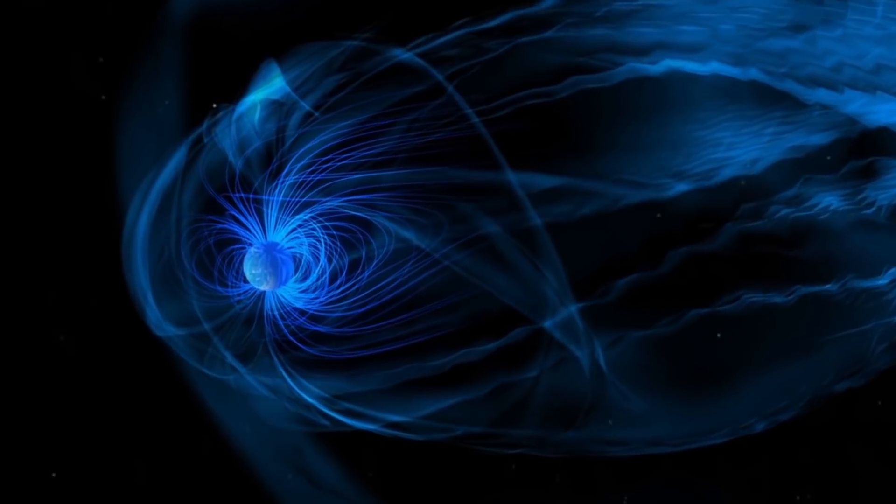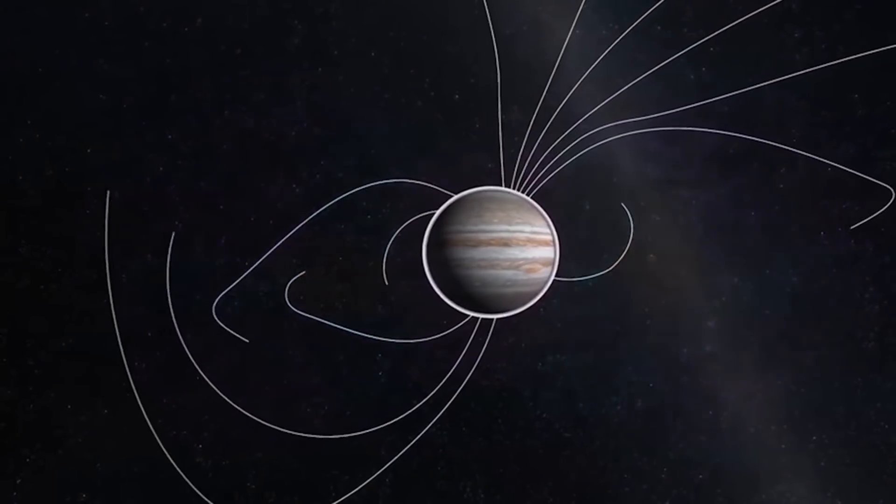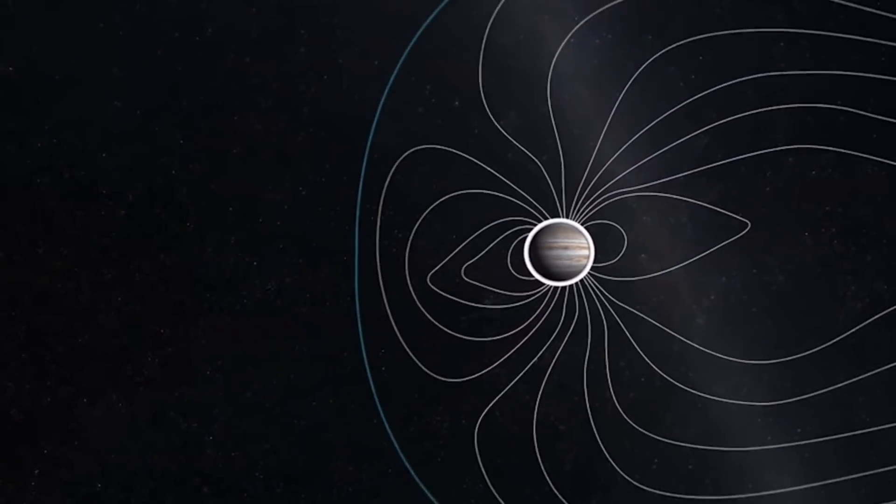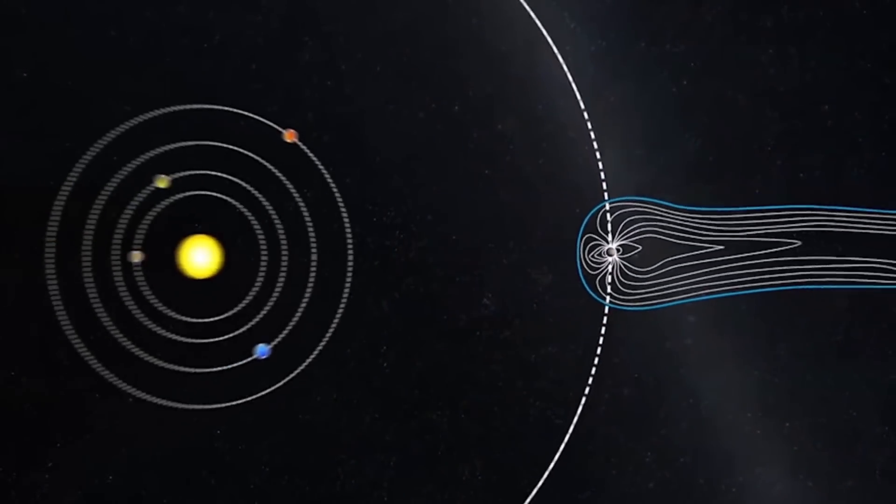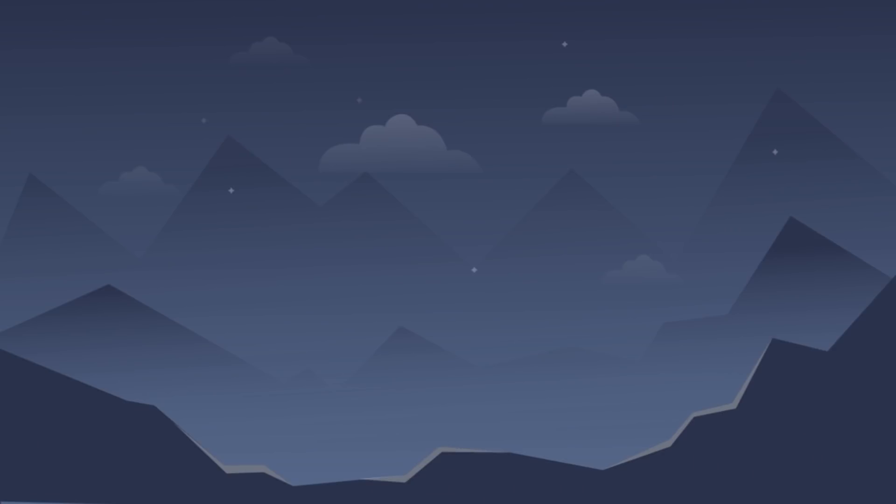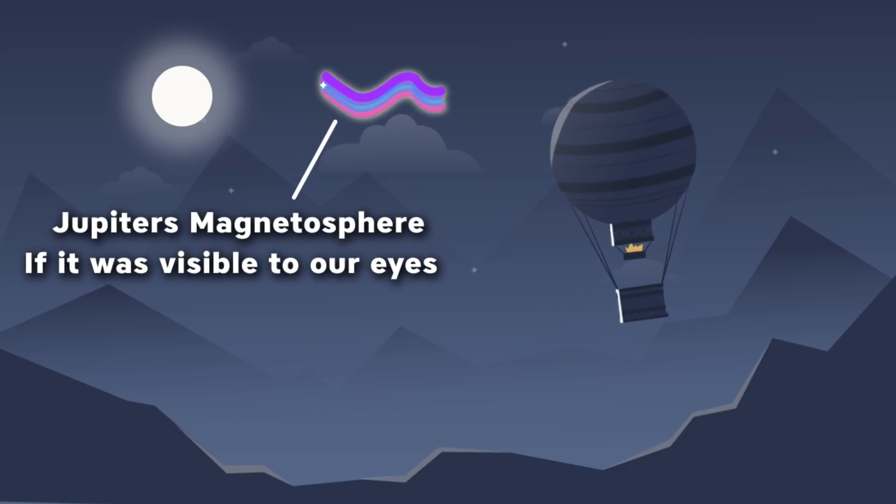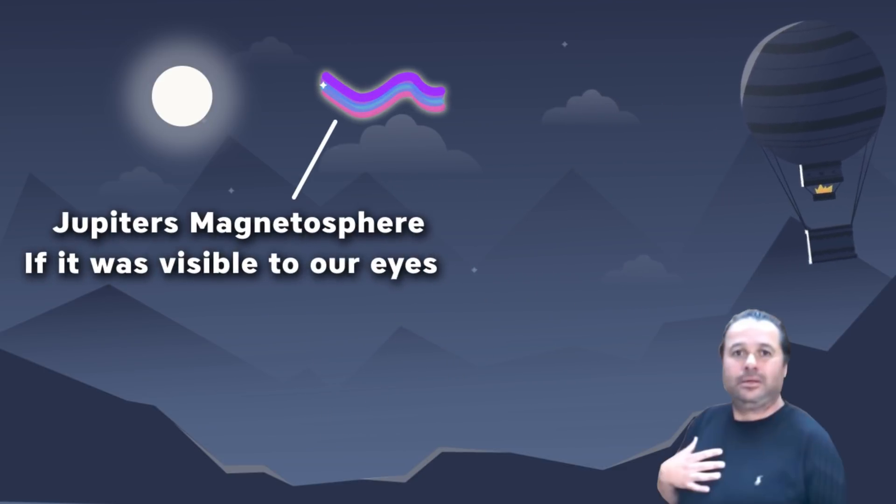Jupiter's powerful magnetosphere is the biggest object in the solar system. In fact, it's even bigger than the sun and stretches up to the next planet Saturn. If it glowed in the wavelengths visible to the eye, it would appear three times the size of the full moon to viewers on Earth. At nights, it would appear like this. It's really humongous and beautiful.